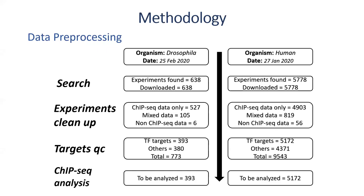The next step was to split the different targets in each experiment which had been employed for the ChIP-seq experiment. We developed a module to do that, whereby we ended up with a total of 733 targets for Drosophila and 9,743 targets for humans. Not all of them were transcription factor targets, so we aimed at transcription factor targets. We had to do manual curation to drop any non-transcription factor targets, and we remained with 393 experiments for Drosophila and 5,972 for humans, which are now to be analyzed using a ChIP-seq pipeline.